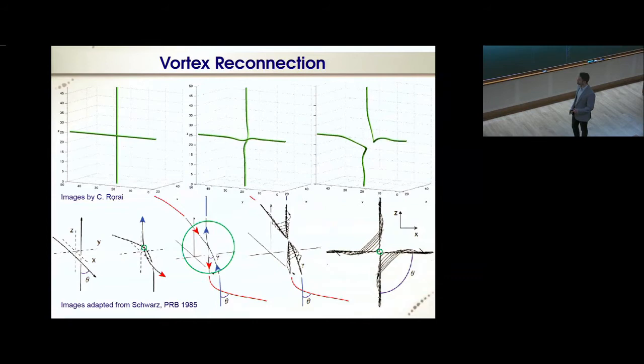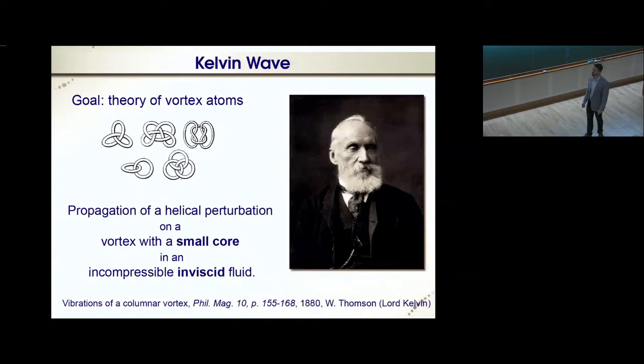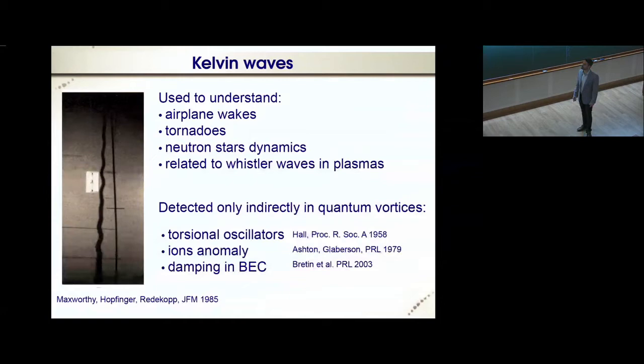These Kelvin waves are propagation of helical perturbations on a vortex with a small core in an incompressible inviscid fluid. The theory was developed by Kelvin to develop a theory of vortex atoms. As we know, vortex atoms are not successful in describing matter, but the theory was very successful in describing other things. For example, the theory of Kelvin waves is used to understand airplane wakes, tornadoes, neutron star dynamics, and are related even to whistler waves in plasma. Until recently with the visualization technique, they have been only detected indirectly in quantum vortices using torsional oscillators by looking at anomalies in the velocity of ions moving along the vortices in a transverse electric field and the damping of oscillations in both Bose-Einstein condensates and superfluid helium.